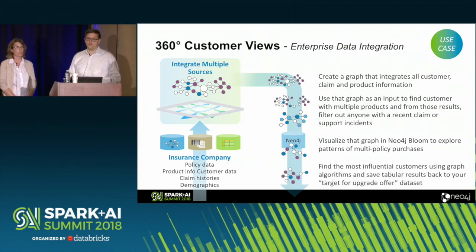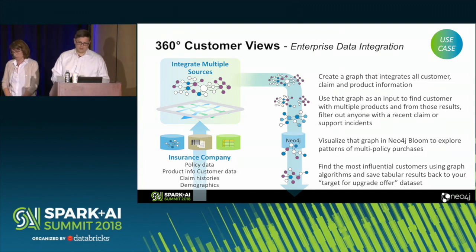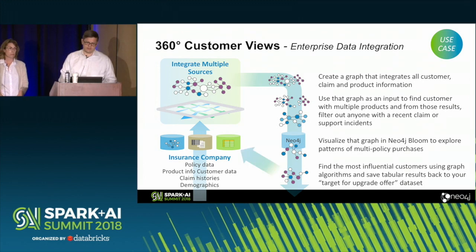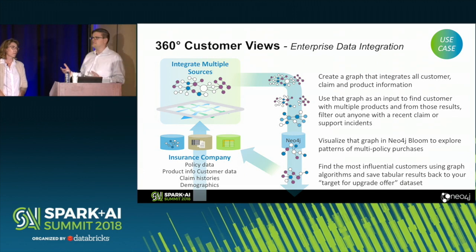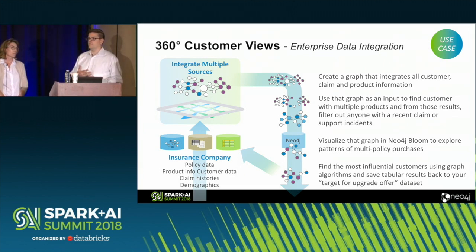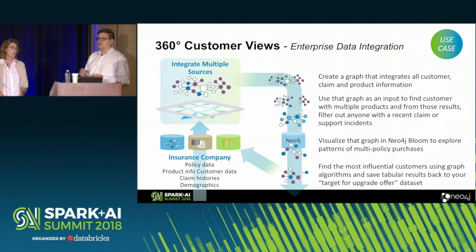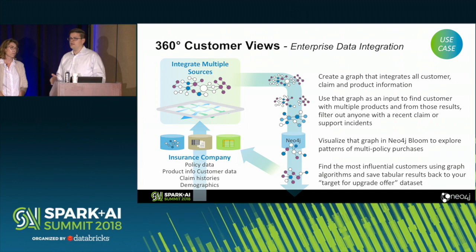A lot of folks are going to be persisting these graphs into Neo4j specifically so they can exploit the extra tooling in the native graph database — the graph algorithms package and Neo4j Bloom, which is a visualization engine that lets non-technical users explore that data. The overall use case is to get a single unified picture of a customer's behavior across the entire company, put that into Neo4j, and then use that as the basis for further analysis. Once you find those influential customers, you can save your target result set back, and Neo4j becomes yet another source you can pull back into your Spark environment.